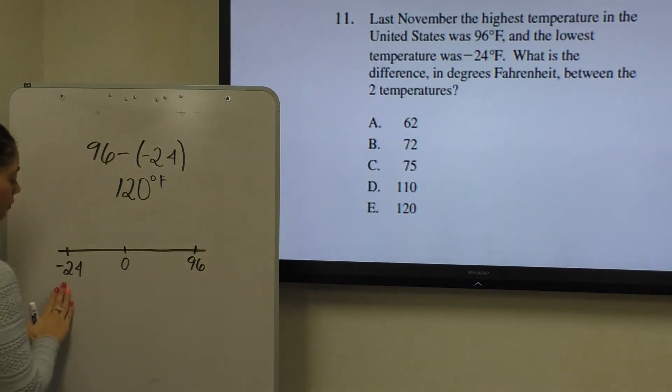So from negative 24 to 0 is 24 values, and from 0 to 96 you have 96 values, which is a total of 120 values. Which is why the difference was 120.